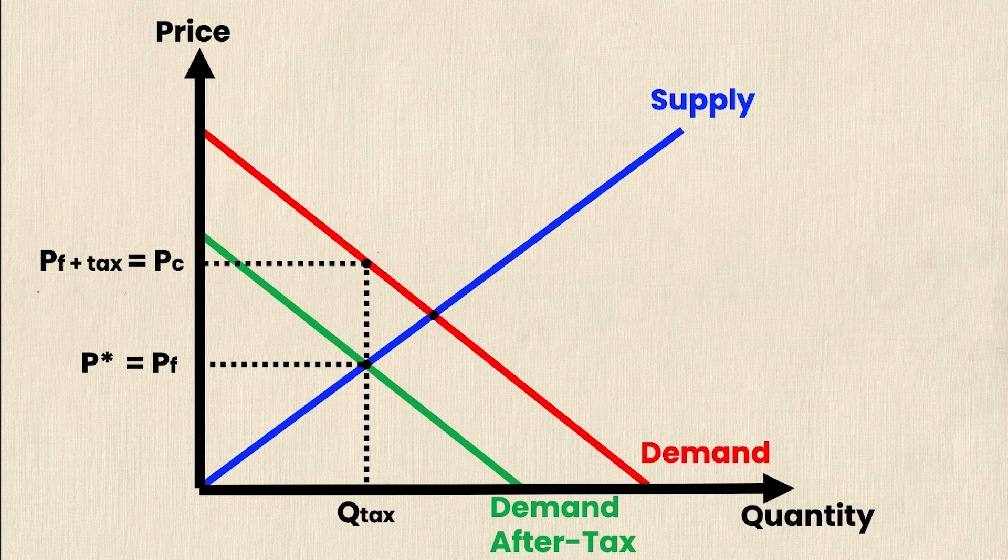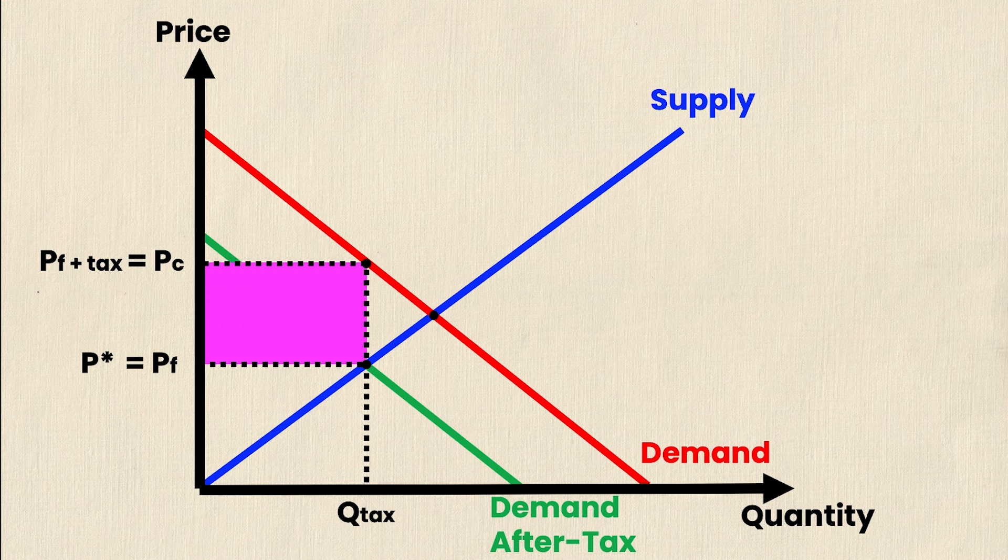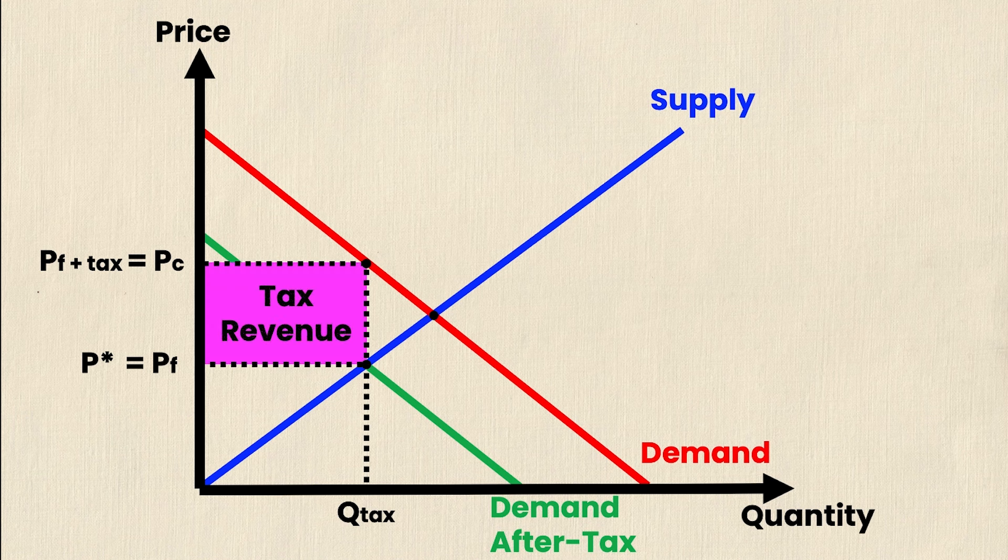So once again, we have the difference between PC and PF, which is your tax. And you can see that in this case, the price the consumers pay is exactly higher than the price the firms receive by the amount of the tax. Now this creates a rectangle right here. And this is actually our tax revenue because the distance between PC and PF is my tax and my tax times my quantity of units traded is my total revenue for taxes.